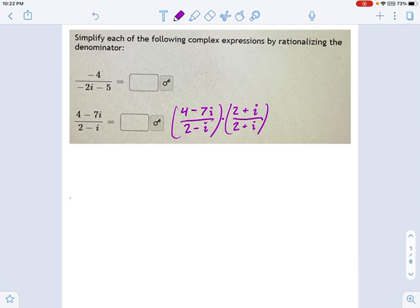And it'll take a moment to sort out, but we should get something with only real numbers on the bottom. So let's try this. There's going to be foiling involved. So 4 times 2 is 8. Then we get plus 4i. Then we get minus 7i times 2, so that's minus 14i. And then minus 7i squared.